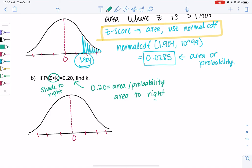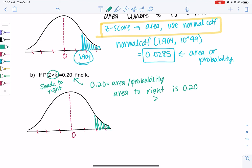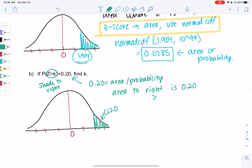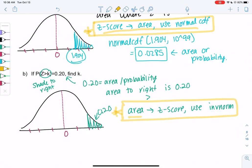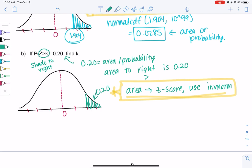The reason I say to the right is the greater than symbol is 0.20. I don't know where that is. I have no idea what z-score that'll be. The area is 0.20. Anytime we have area and we want z-score, we use inverse norm. We need area to the left, unfortunately, and we have area to the right. So area to the left would be 0.80, 1 minus 0.20.